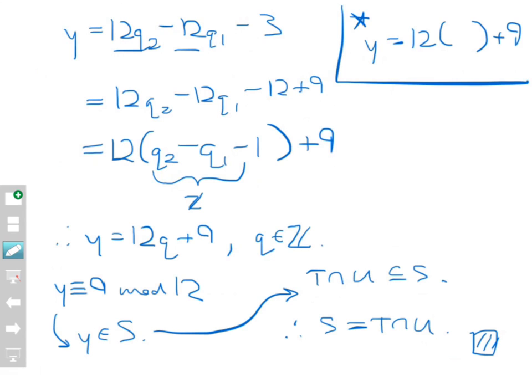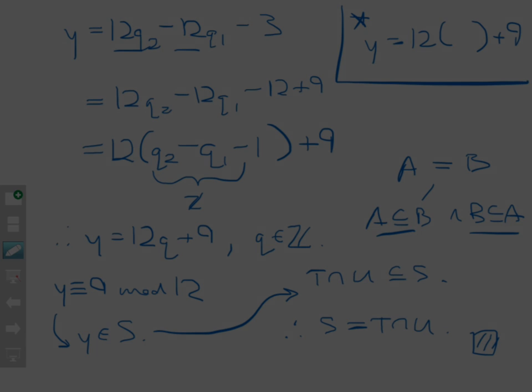That was considerably longer than some of the other screencast proofs. If you can't follow it, rewind and pause to check the steps. The main strategy is still: if you want to prove that one set equals another — A equals B — you prove that A is a subset of B and B is a subset of A, and we do each of those parts using the choose-an-element method. Thanks for watching.